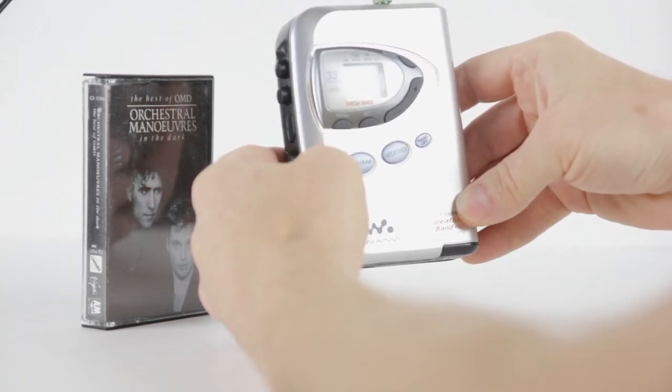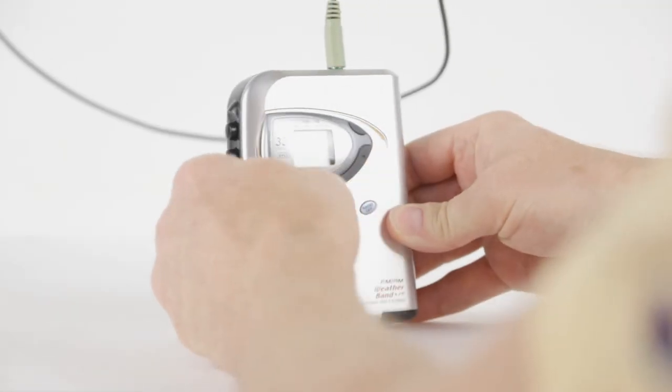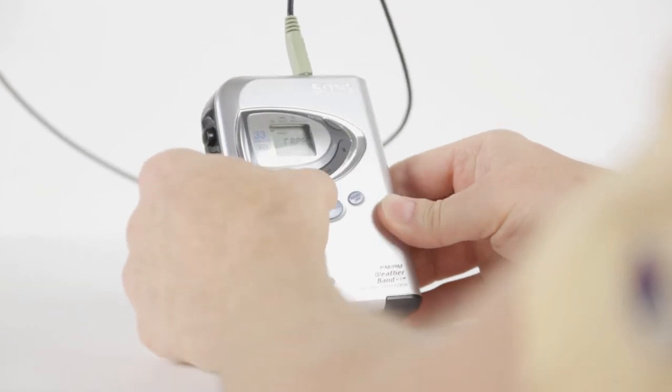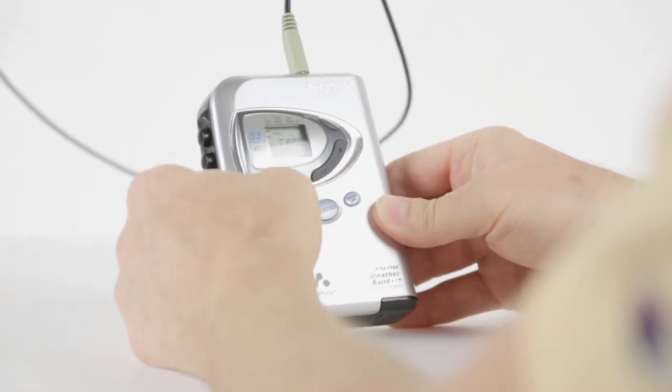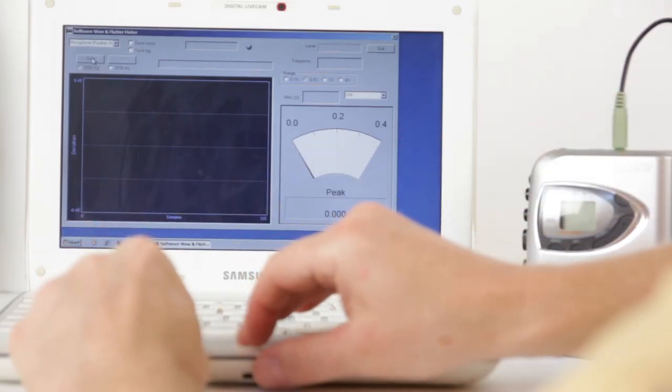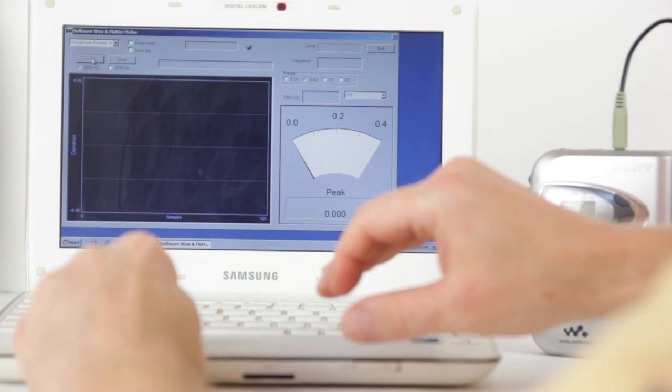I must say that the Walkman generates its own hiss, probably because of insufficient shielding in the noisy amplifier. The hiss turns into a growl when Mega Bass is engaged. Pitch stability, known as Wow and Flutter, is quite decent for a $30 Walkman.